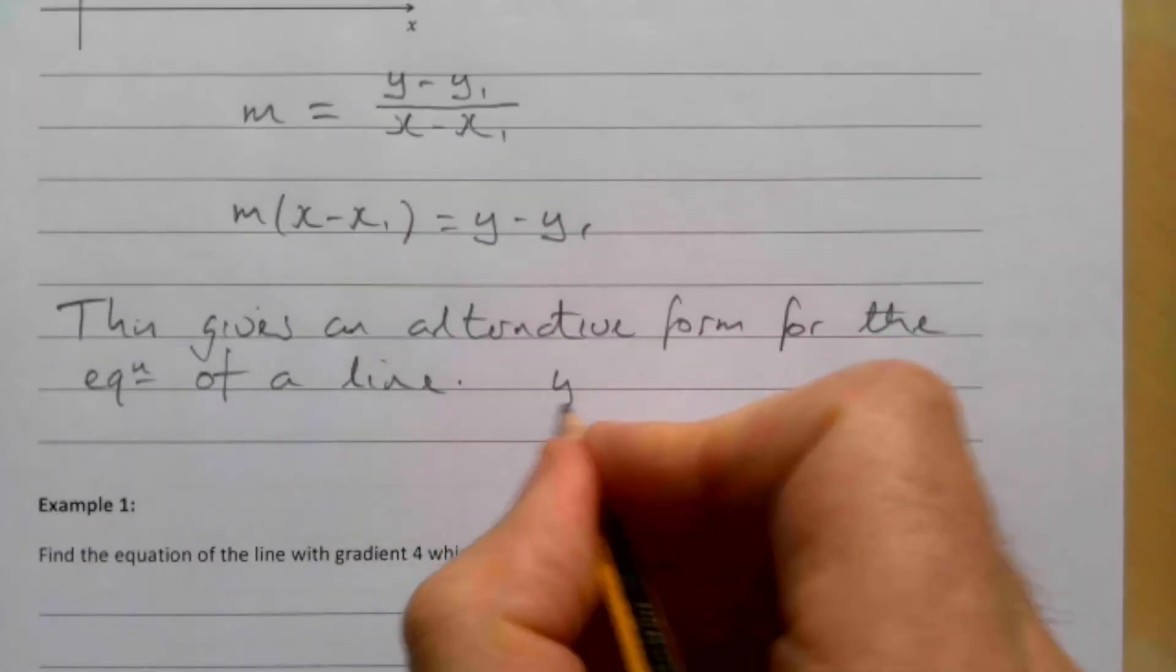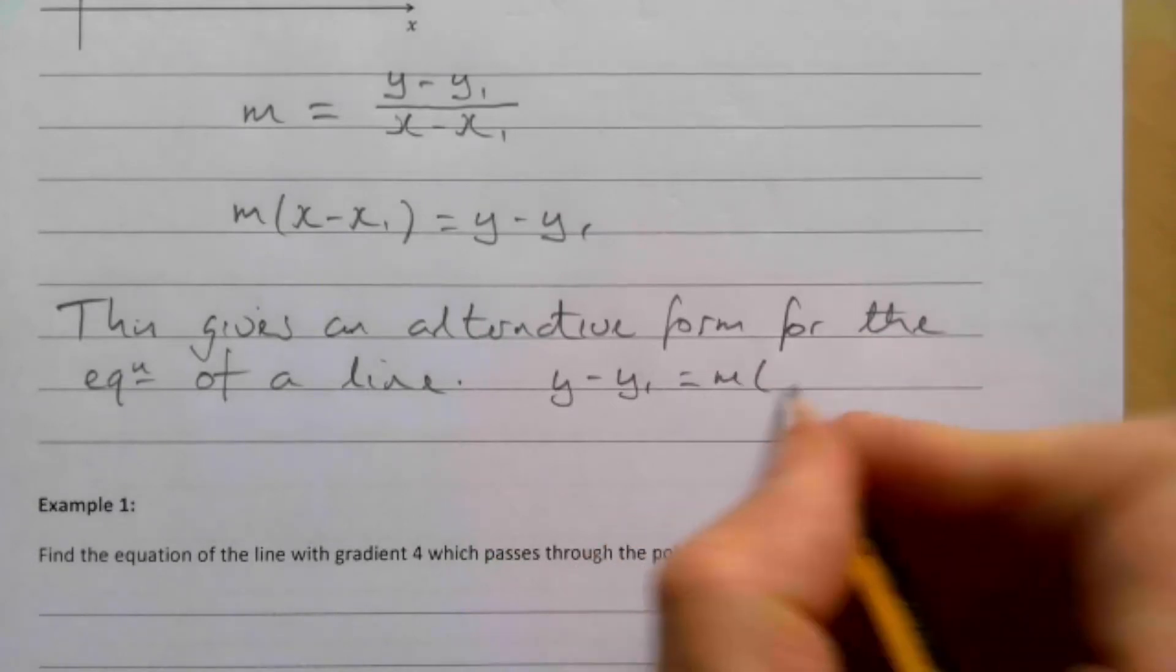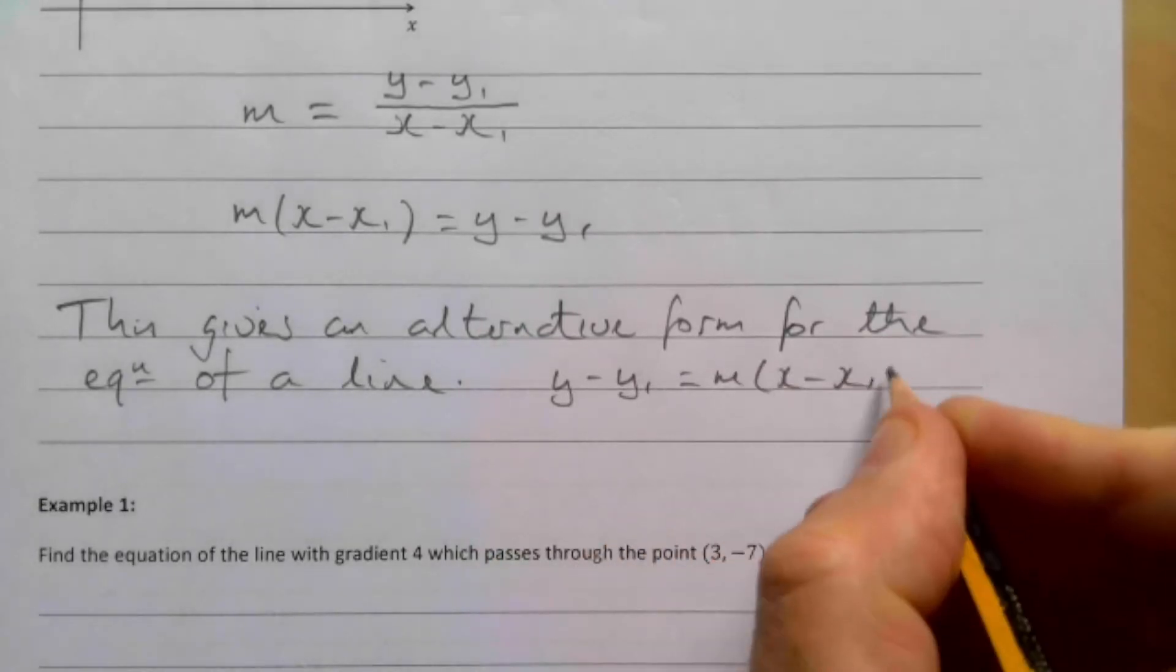this gives an alternative form for the equation of a line. And that, of course, is y - y1 = m(x - x1).